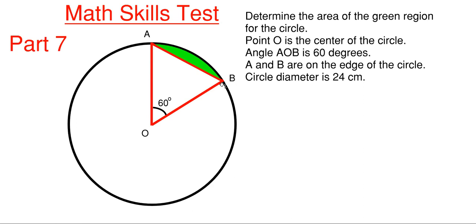The angle from A-O to B is 60 degrees as shown. A and B are on the edge of the circle and the circle diameter is 24 centimeters across.